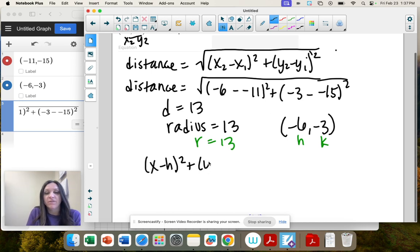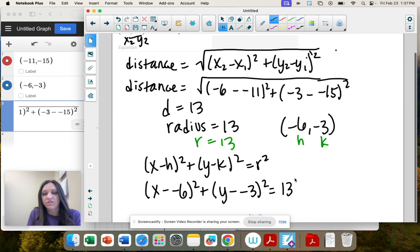Here's our general form of our circle. So x minus h is negative 6, y minus k, negative 3, and then r is 13.